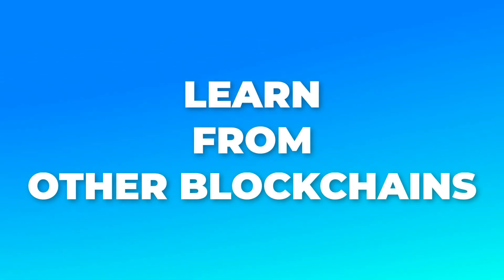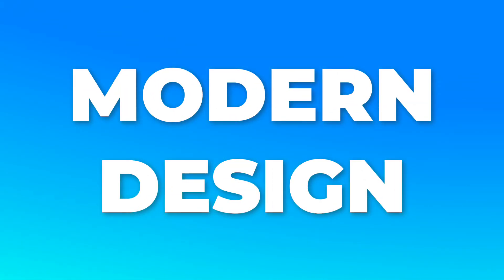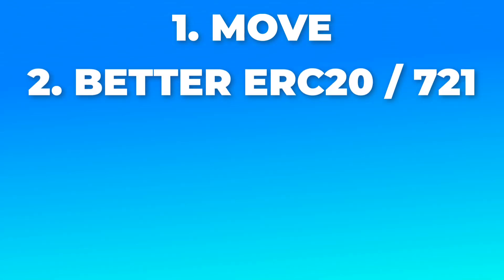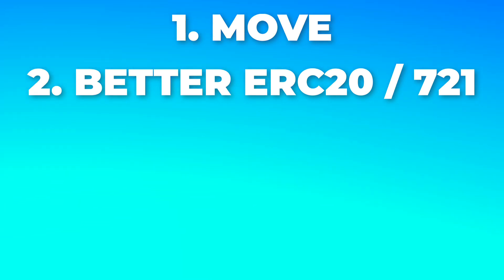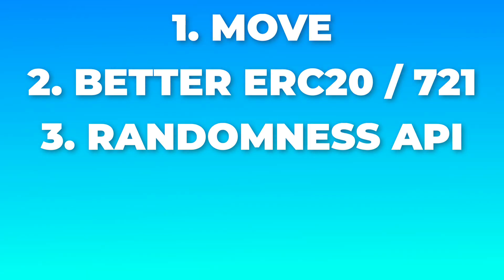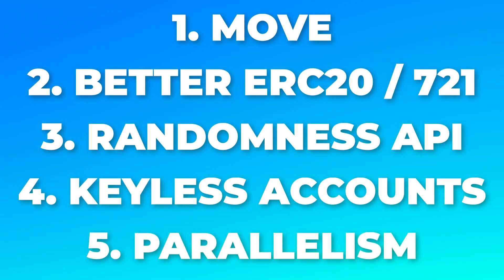So to recap, Aptos was able to learn from earlier blockchains and come up with a better design. It uses Move, a programming language developed by senior engineers of Meta and designed for security. Aptos has the equivalent of ERC20 and ERC721 tokens, but improved them. With Aptos, you can generate randomness in a decentralized and secure way at the protocol level. It has a great user experience thanks to innovations like keyless accounts, and it's very scalable thanks to its native parallel execution.